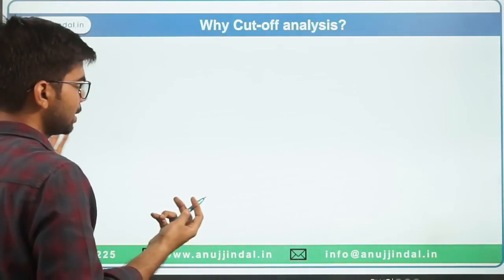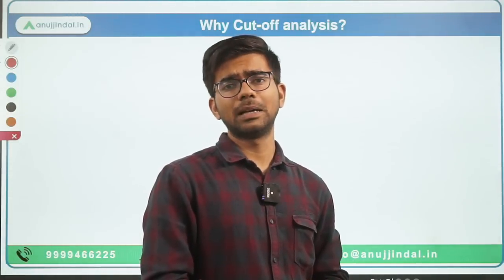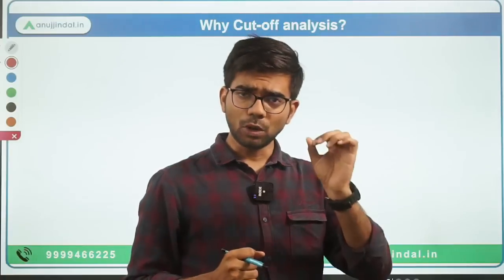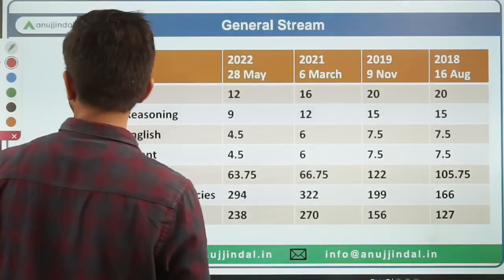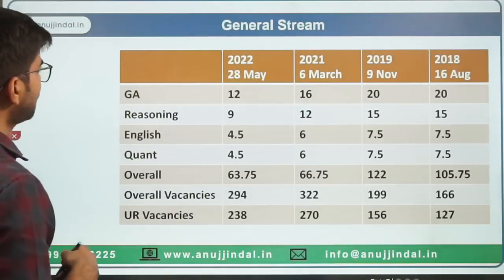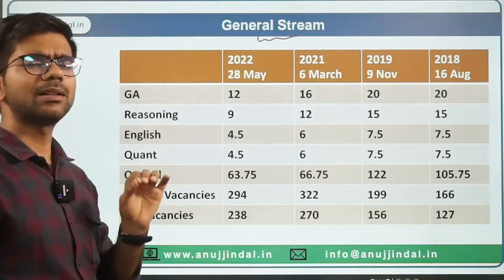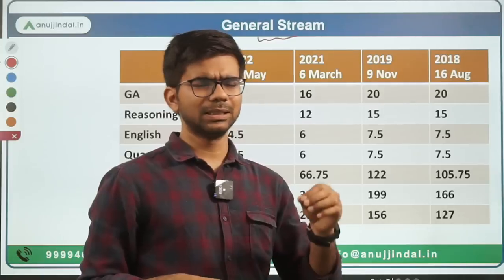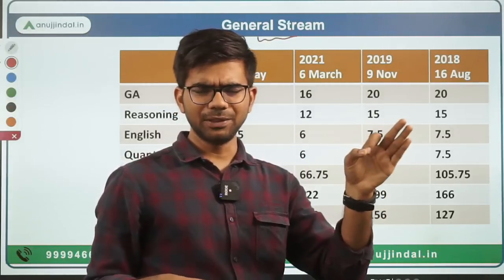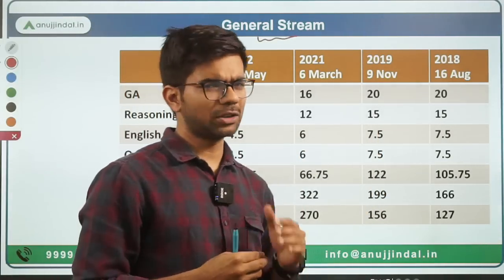In Phase 1, there are four subjects — GA, English, Quant, and Reasoning. GA and English don't cause much difficulty. The major burden is Quant and Reasoning — scoring in those is a bit difficult. I am discussing the general stream. RBI hires assistant managers for three different streams — DEPR and others. This data is specifically for the general stream and for the unreserved category.